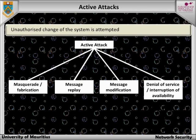For example, a network may be flooded with messages that cause a degradation of service, or possibly a complete collapse if a server shuts down under abnormal loading. Because complete prevention of active attacks is unrealistic, a strategy of detection followed by recovery is more appropriate.